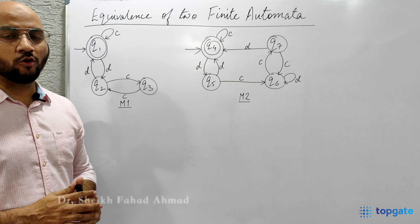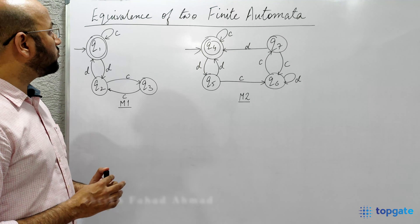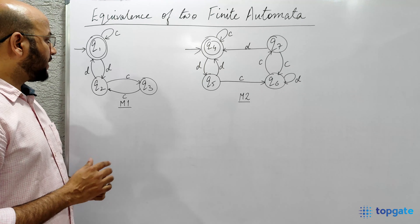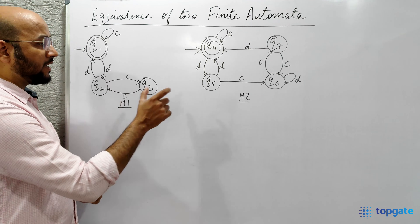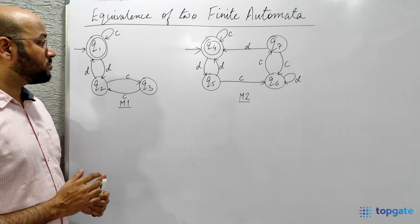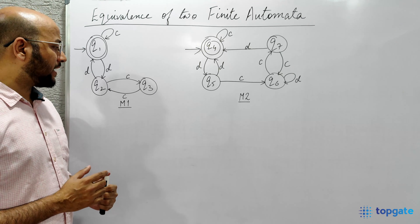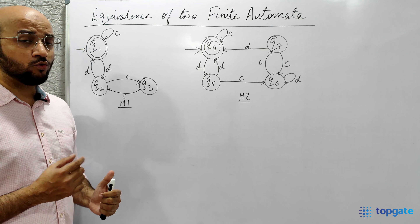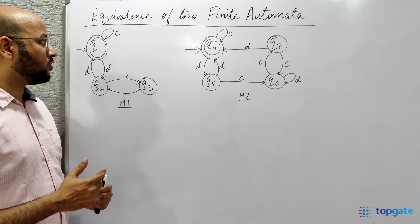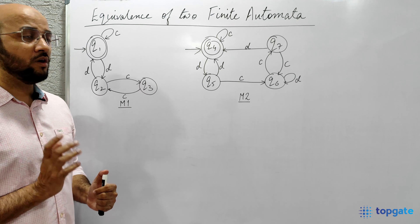Hello everyone, welcome to the channel Top Gate. In this video we will see a concept called equivalence of two finite automata. We have two machines M1 and M2 and we need to find out whether these two machines are equivalent or not. First we will understand what equivalence means, and then we will see the different steps to determine whether the two machines are equivalent.